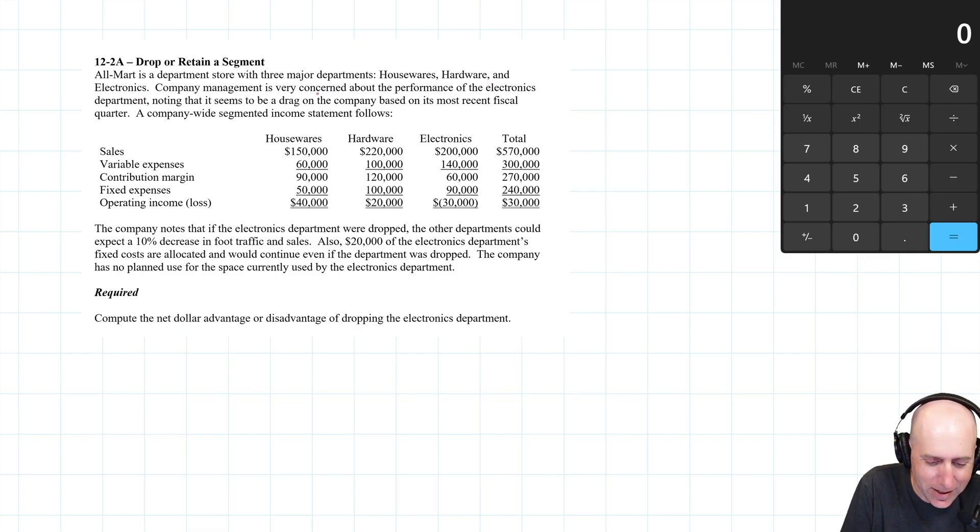Company management is very concerned about the performance of the electronics department, noting that it seems to be a drag on the company based on its most recent fiscal quarter. A company-wide segmented income statement follows and you can see electronics is losing 30 grand and the company is only making 30.